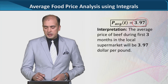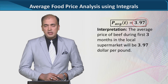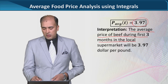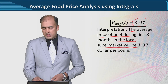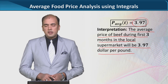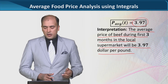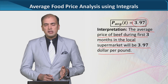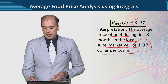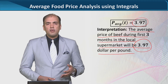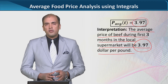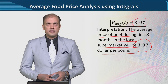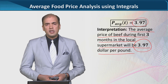The final value is 3.97. This is the real-life interpretation: the average price of the beef during the first three months in the local supermarket will be $3.97 per pound. So the answer to this whole process is that the average price of ground beef for the first three months will be $3.97. We have captured the pattern of the price change over the first three months and computed the average value using definite integrals. Thank you.